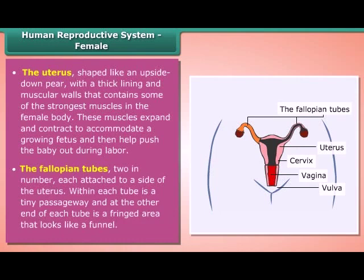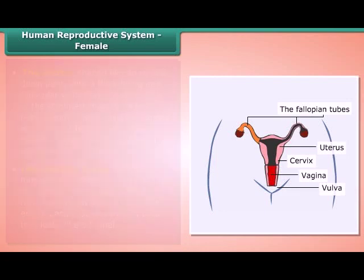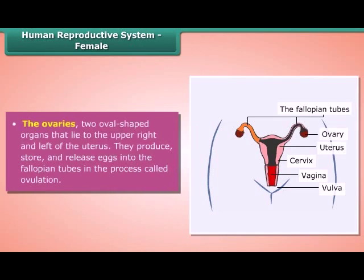The fallopian tubes — two in number, each attached to a side of the uterus. Within each tube is a tiny passageway, and at the other end of each tube is a fringed area that looks like a funnel. The ovaries are two oval-shaped organs that lie to the upper right and left of the uterus. They produce, store, and release eggs into the fallopian tubes in a process called ovulation.